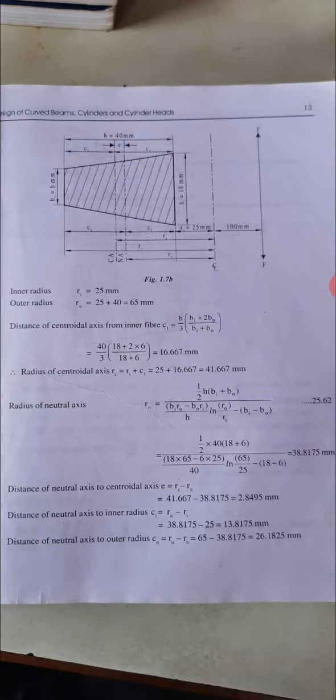With height 40mm, smaller side 6mm, bigger side 18mm, radius of curvature R = 25mm. Redrawing the cross section of a trapezium.